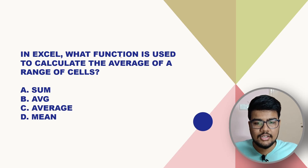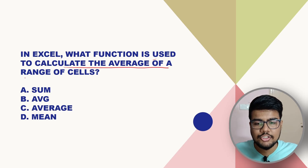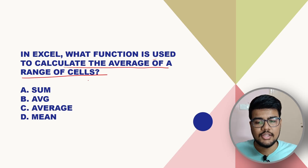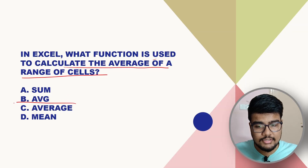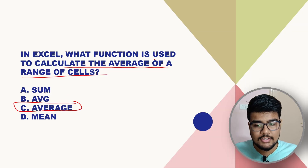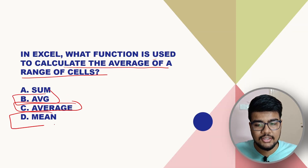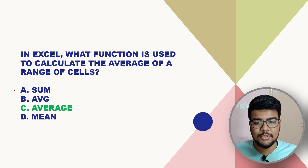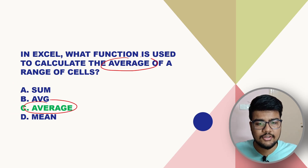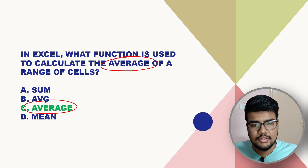In Excel, what function is used to calculate the average of a range of cells? The answer is C — the AVERAGE function. The name itself tells you what the question is asking, so you can relate this aggregation function directly from the question.